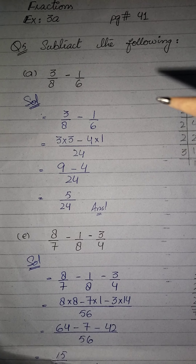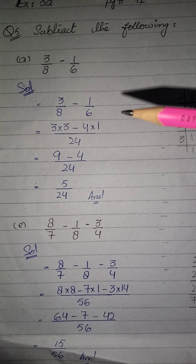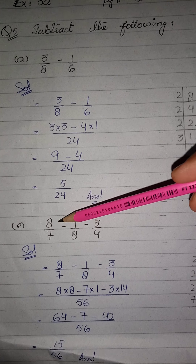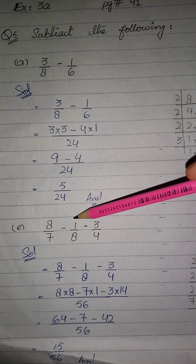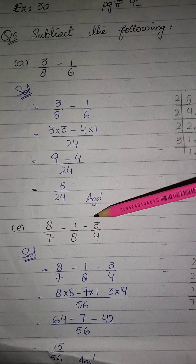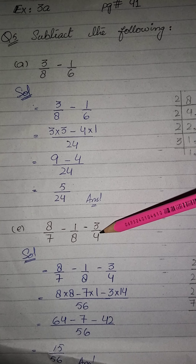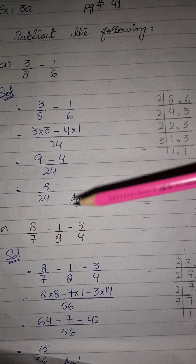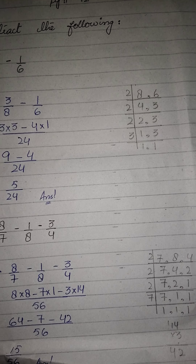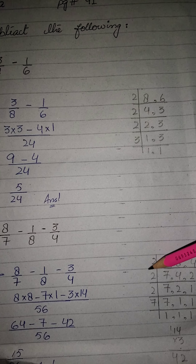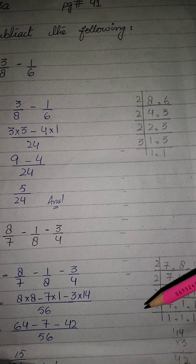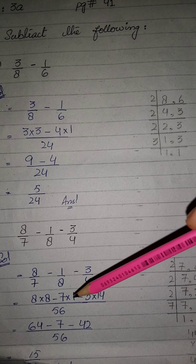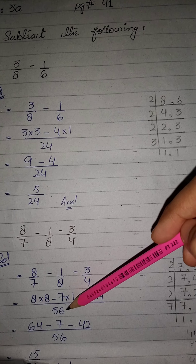اب اس کا part (e) ہے: 8/7 minus 1/8 minus 3/4۔ اب 7، 8 اور 4 — ان تینوں کا LCM لیا تو ہمارے پاس یہ factors آگئے۔ ان سب کو multiply کریں گے تو ہمارے پاس آئے گا 56۔